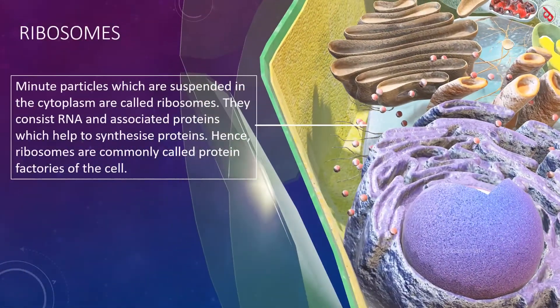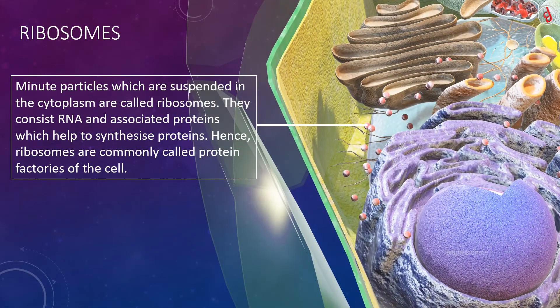You can see minute particles which are freely suspended in the cytoplasm called ribosomes. They consist of RNA and associated proteins, which help to synthesize proteins. Hence, ribosomes are commonly referred to as protein factories of the cell.